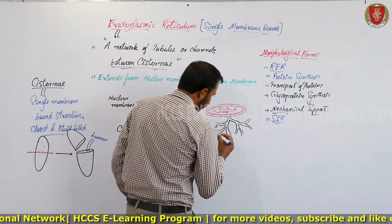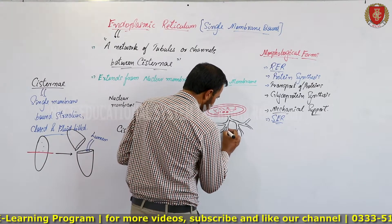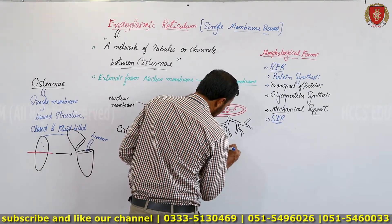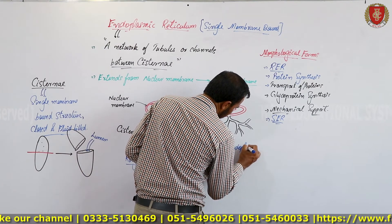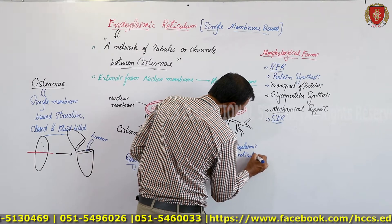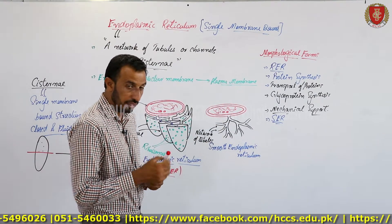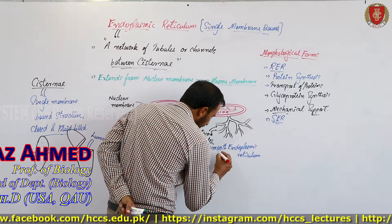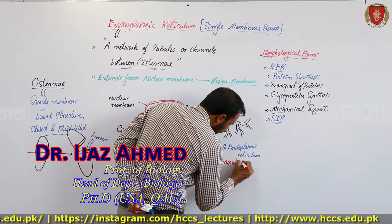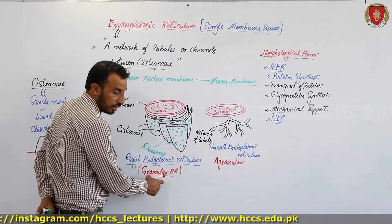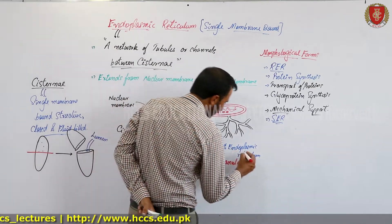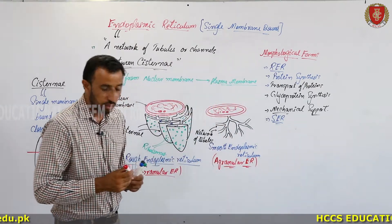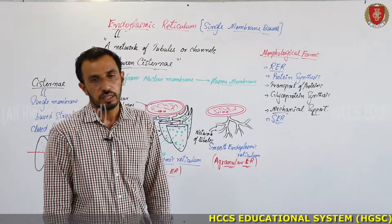The other morphological form is the Smooth Endoplasmic Reticulum. Its surface appearance is smooth — no ribosomes are attached, so the surface is smooth. This is why we call it Smooth Endoplasmic Reticulum, also known as Agranular Endoplasmic Reticulum.